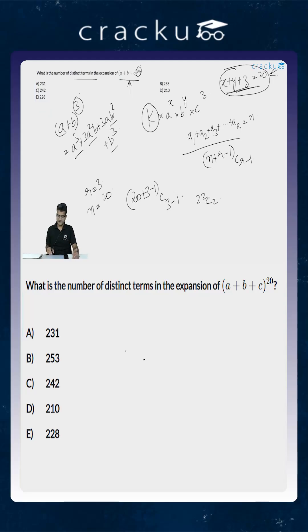What is the value of 22C2? It is 22 × 21 ÷ 2. This is 11, so it will be 21 × 11, which is 231, which is option A.